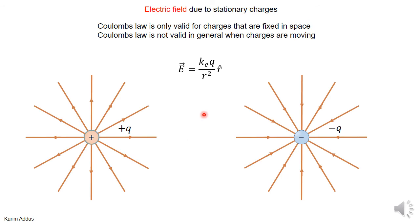You've learned Coulomb's law and how to get the electric field using kq over r squared. The important note is that this equation is only valid when charges are fixed in space. If the charges are moving arbitrarily in any kind of motion, this equation is no longer correct. So it's a very limited equation.